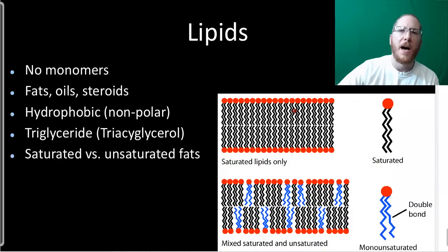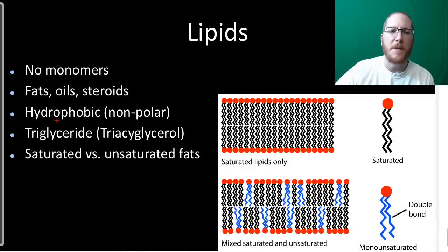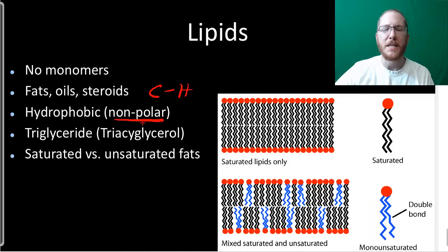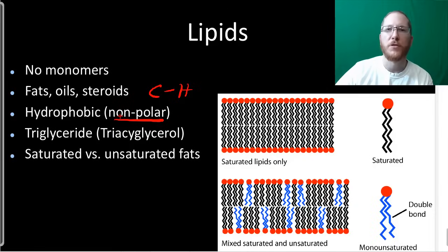Now, lipids — this is kind of an interesting group. It doesn't have a true monomer, and there are lots of different types: fats, oils, steroids. There's not one set subunit. They tend to be hydrophobic because they have a whole bunch of carbon-hydrogen bonds, which are essentially nonpolar, meaning they don't really like water. Most people know water and oil don't mix — fats don't dissolve in water. That's one of the unique things about lipids versus most other macromolecules.